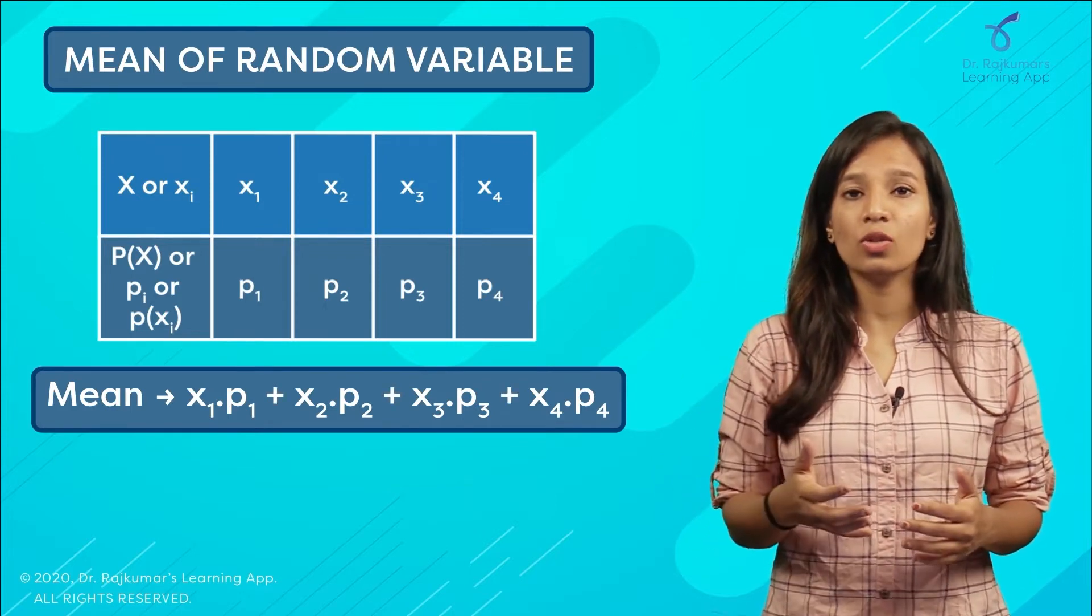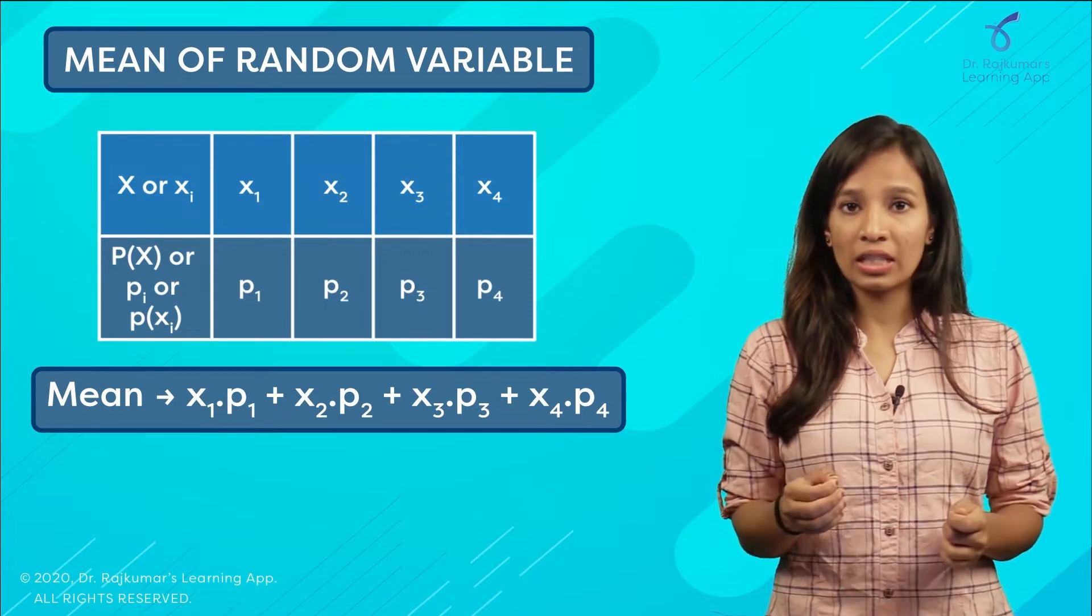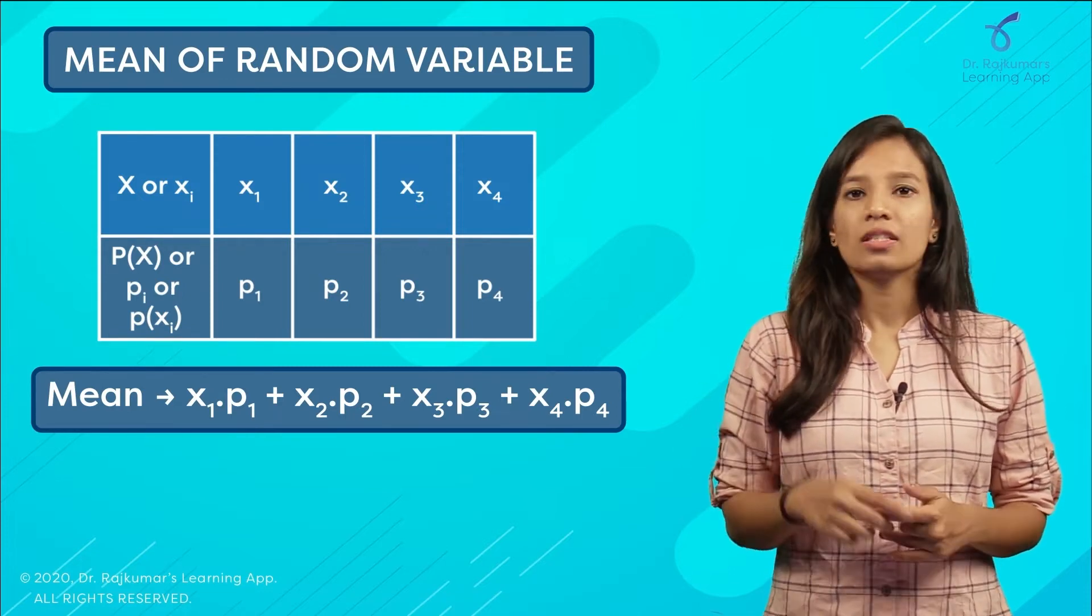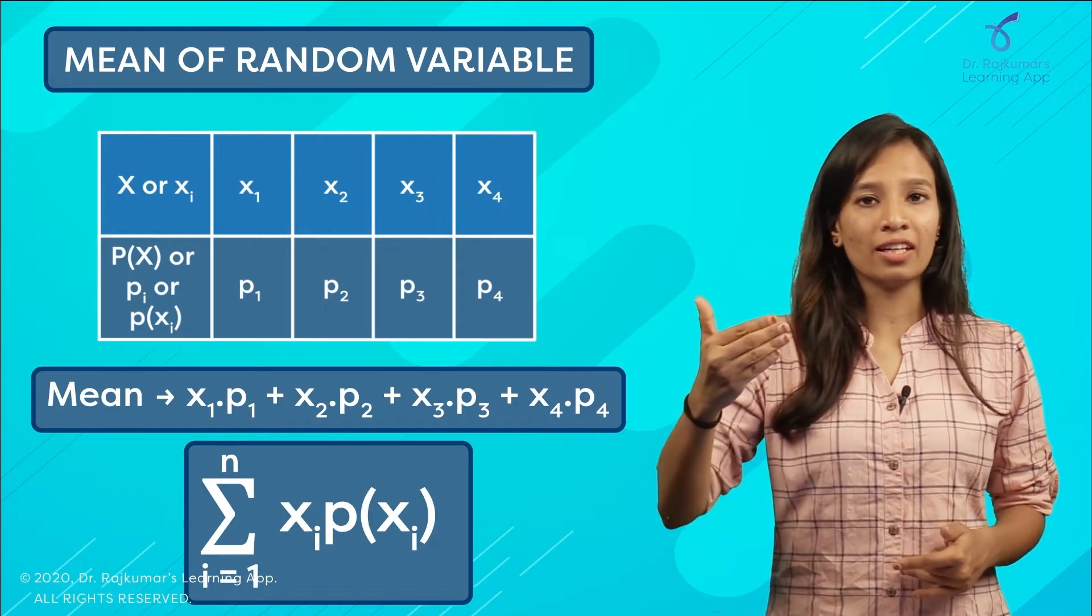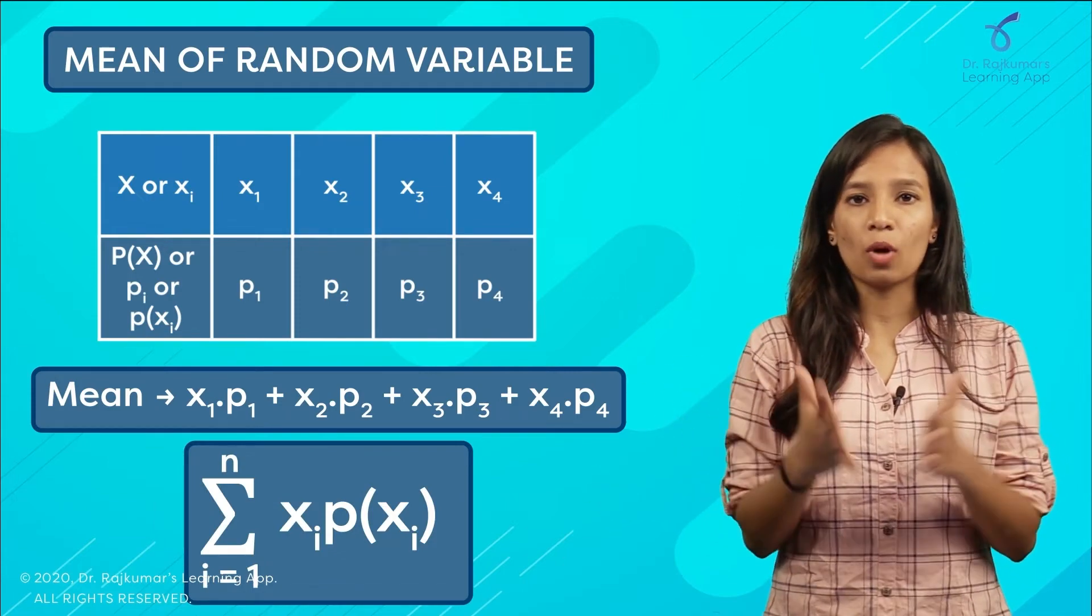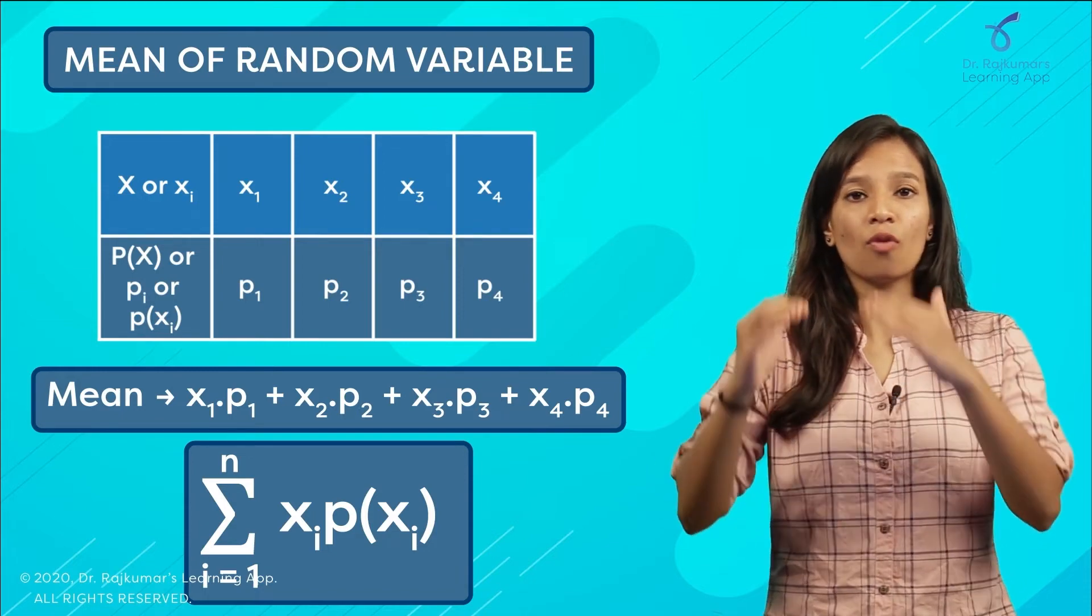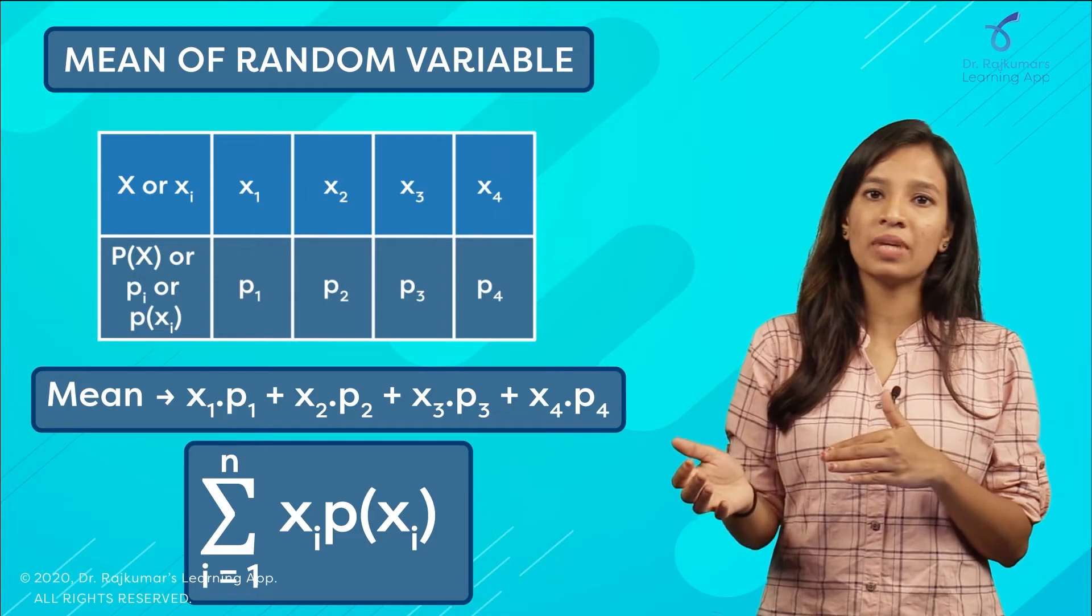The formula is summation over i equals 1 till n, xi into p of xi. So the product of xi with your probability of xi, and the summation of all of your xi and p of xi in your distribution will give you the mean of the random variable.